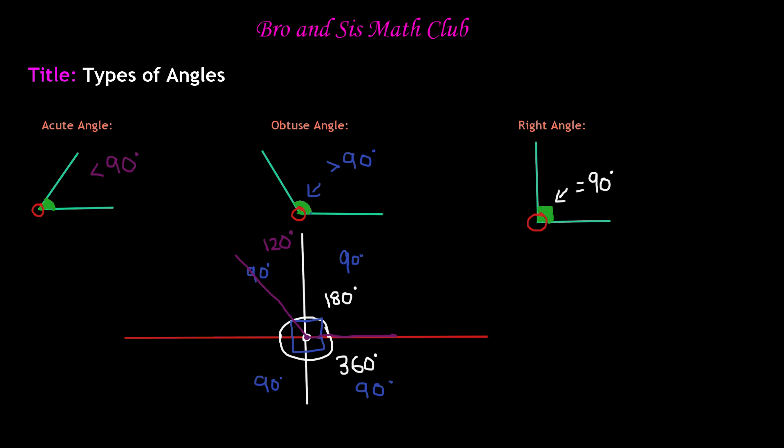So an example of an acute angle, if you go ahead and draw it over here. So I'll draw it with green, and here's the common vertex. It has to be less than 90 degrees. So let's say that it is 30 degrees less, so this could probably be 60 degrees. So a 60 degree angle is an acute angle because it is less than 90 degrees.